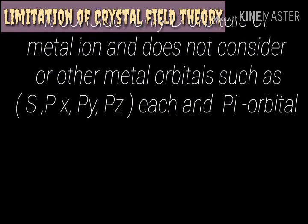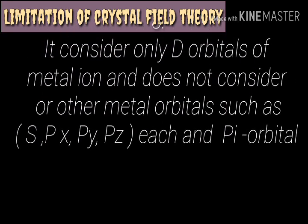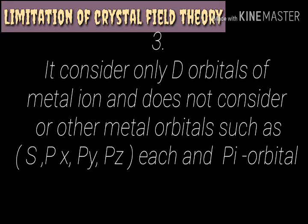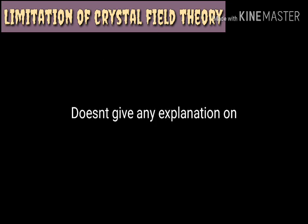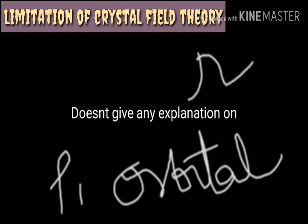Third point: CFT considered only the d orbitals of the metal ion. It did not involve s orbitals, p orbitals, or pi orbitals. Pi orbitals ki koi bhi explanation nahi di — no explanation was given for pi orbitals. This is another limitation of Crystal Field Theory.